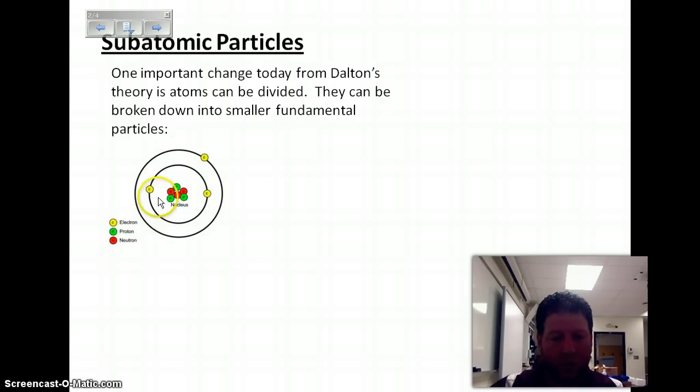Electrons, shown as a yellow E. Protons, green P. And the red N for the neutron. Okay, so let's talk about the electrons first.